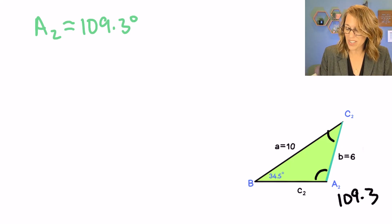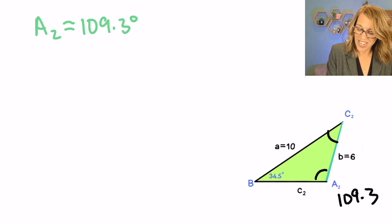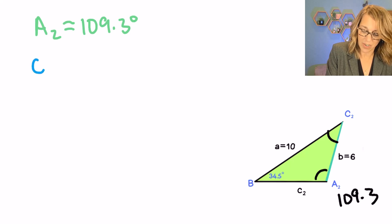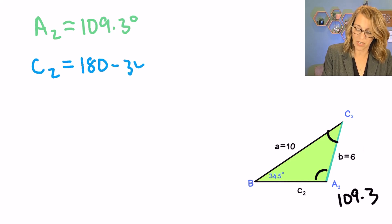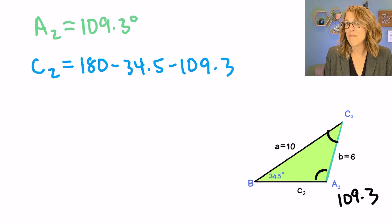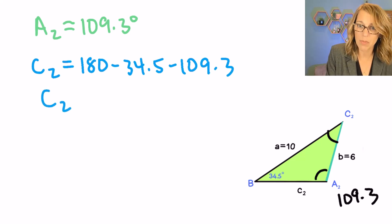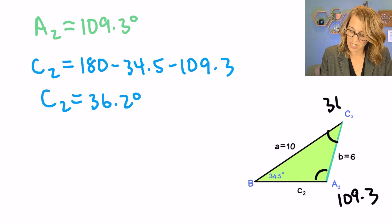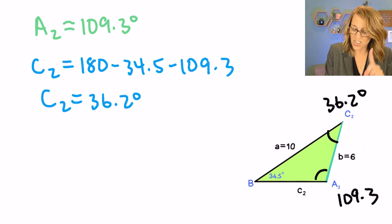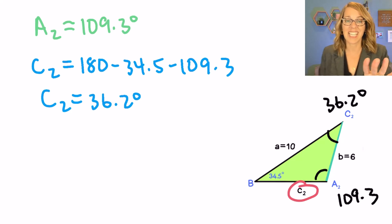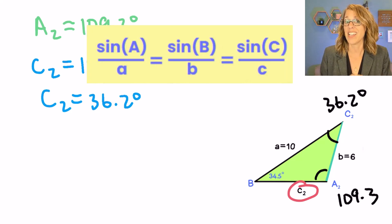A-sub-2 was 180 minus 70.7, which gives us that obtuse angle of 109.3 degrees. We're going to find the other angles in the same order as triangle one. So I want to start with finding angle C. C-sub-2 equals 180 minus 34.5 minus 109.3, giving angle C a measure of 36.2 degrees.